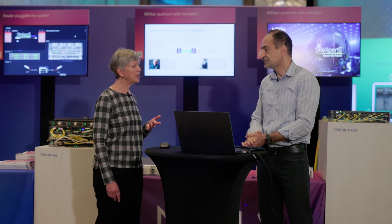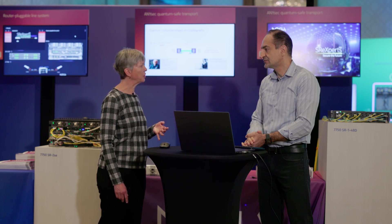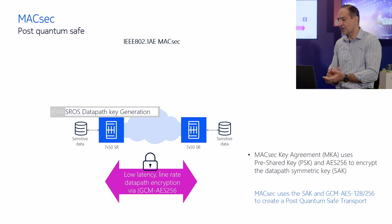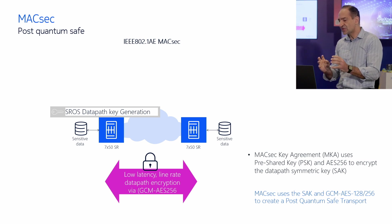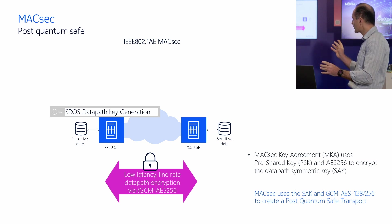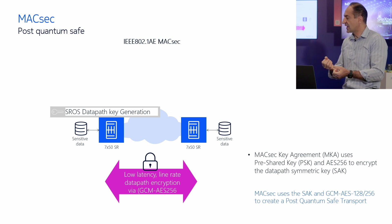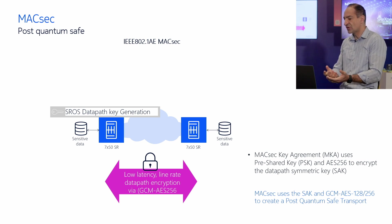Great. So can you explain to us how the Nokia solution works? For sure. When it comes to encryption, as I mentioned, there are two sides to it: asymmetric and symmetric. Encryption requires distributing keys between two routers to ensure data packets are encrypted. To distribute these keys, we use asymmetric encryption — like PKI, RSA for TLS, and Diffie-Hellman for SSH, which you use to log into nodes. Those are all broken by quantum computers.